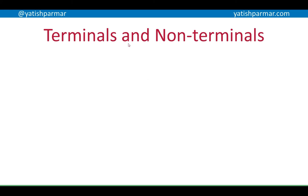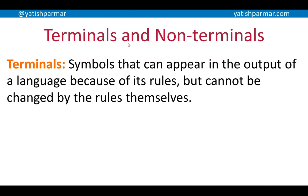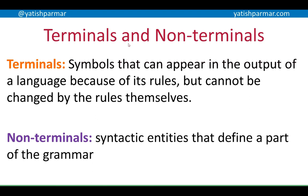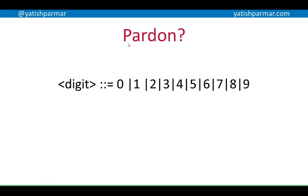Backus-Naur Form deals with terminals and non-terminals. Terminals are symbols that can appear in the output of a language — they appear because of the rules of a language, whatever's in the grammar. But terminals can't be changed by the rules themselves. Whereas non-terminals are syntactic entities that define a part of the grammar, and they can be changed — they're created by the rules. Here's an example to illustrate what that means.